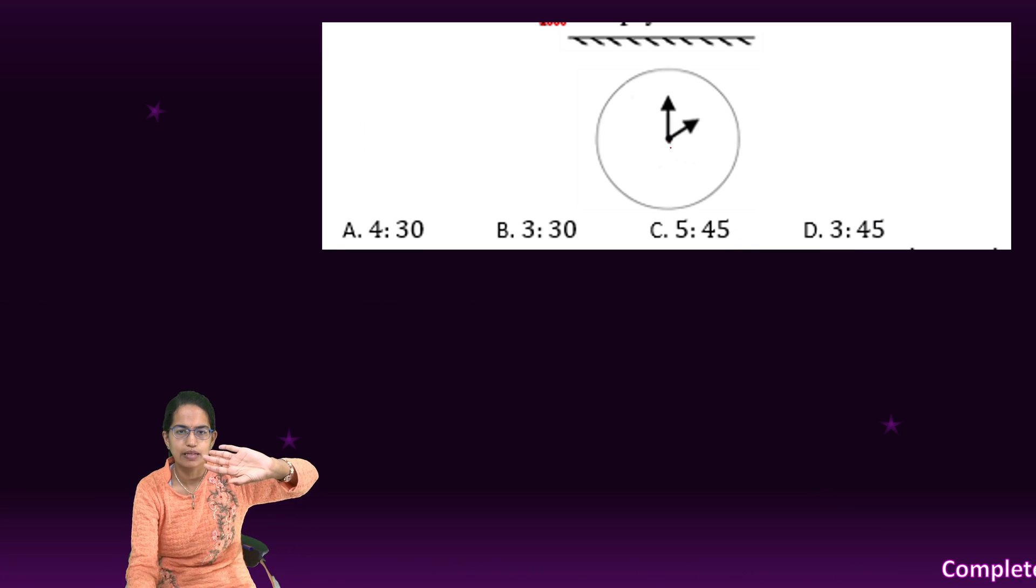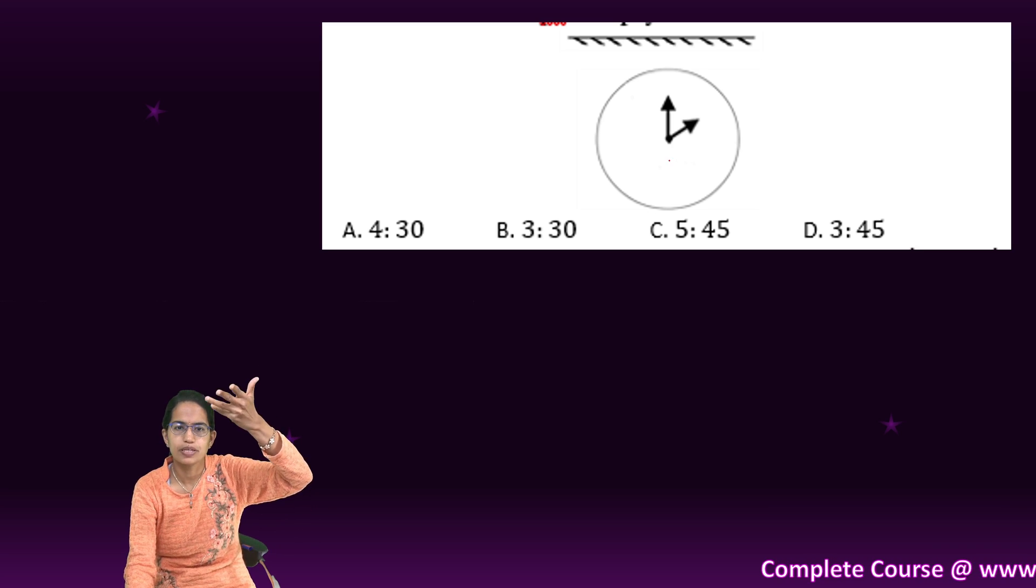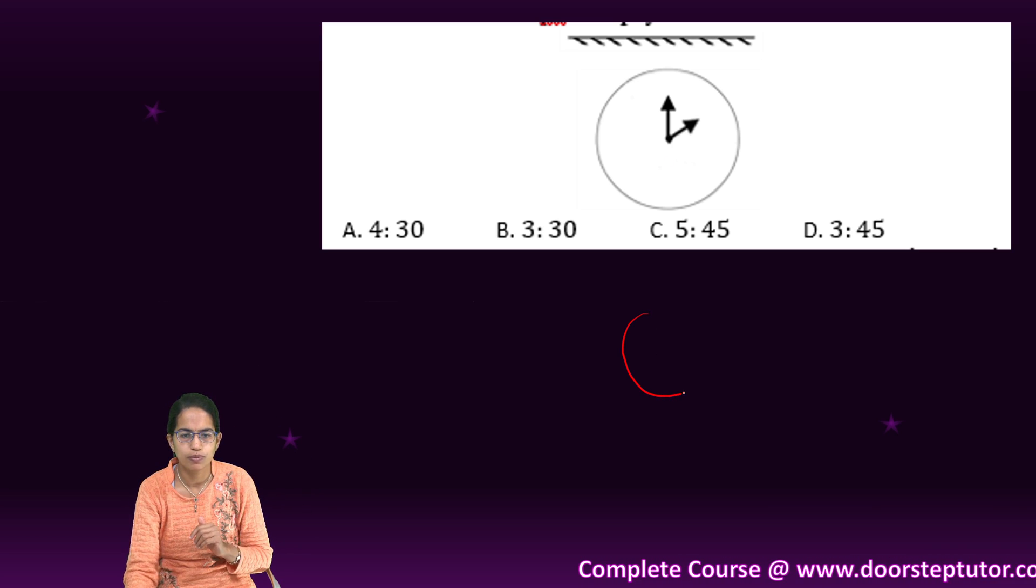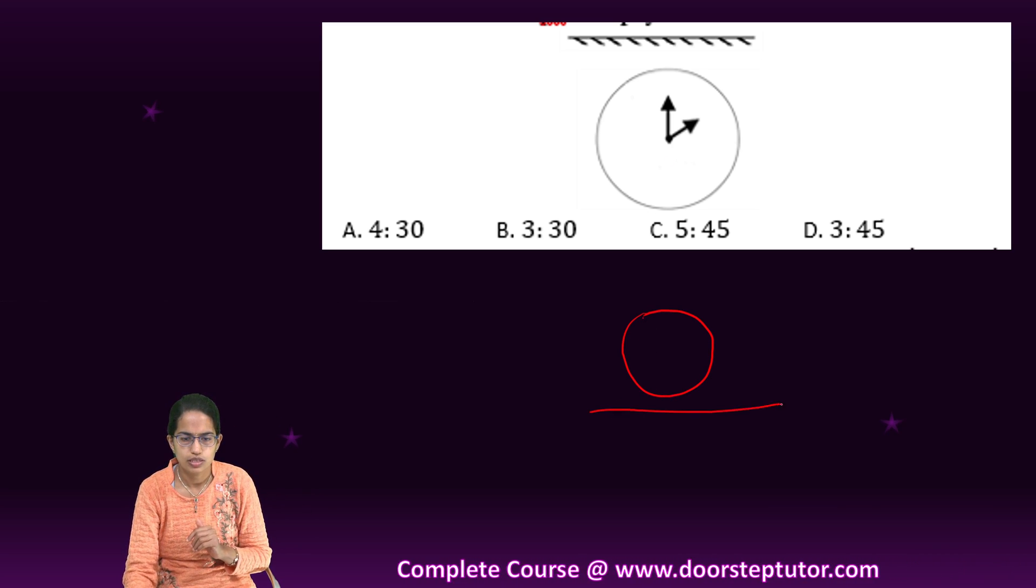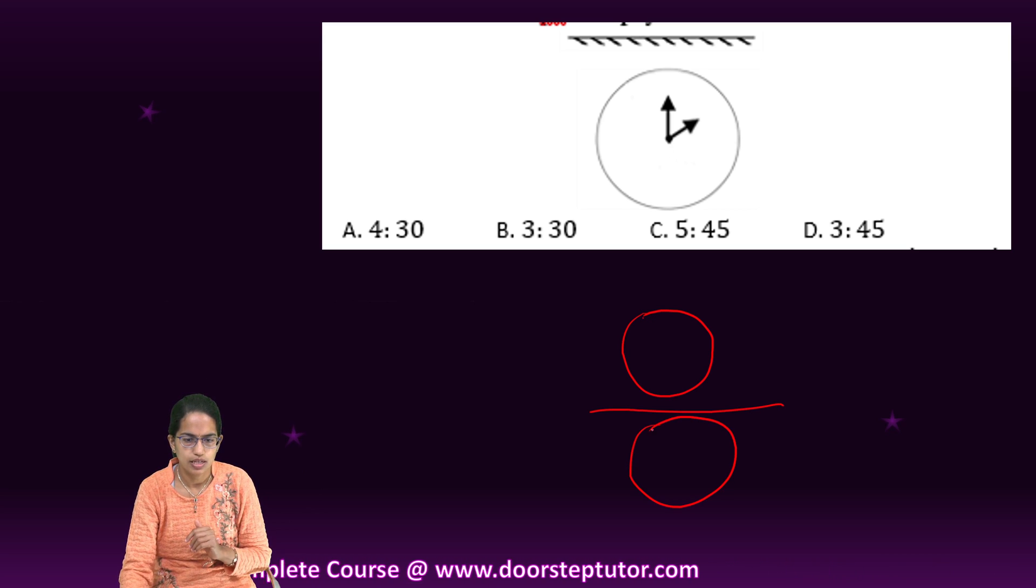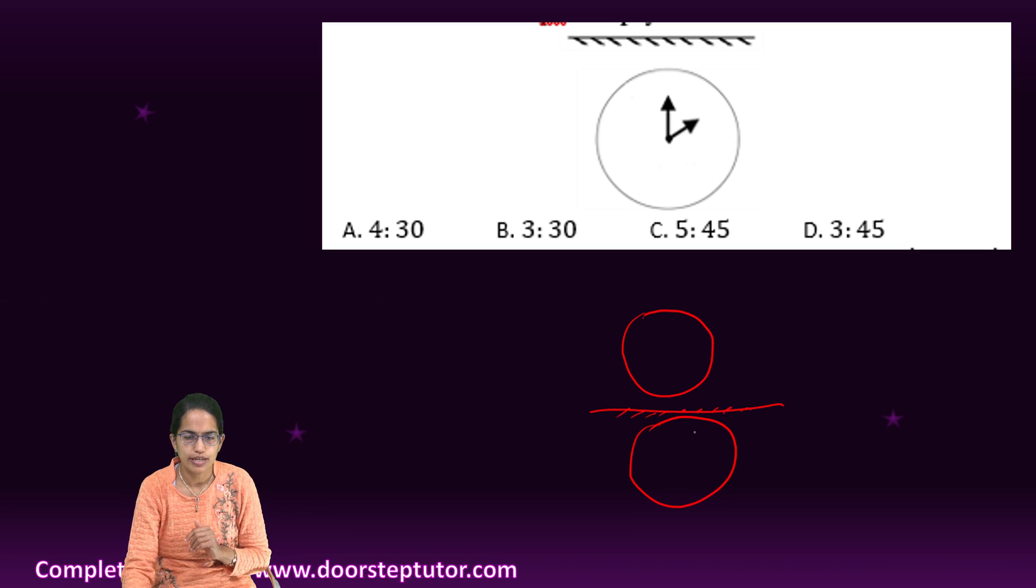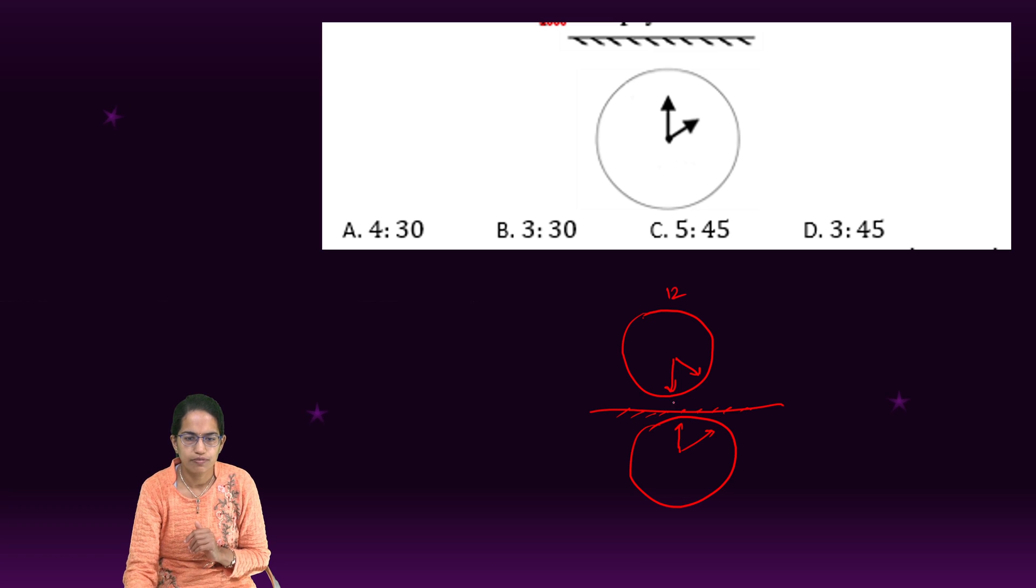If this is the time, what is the flip image of it? So flip image of it would be what? So this is the circle and this is another circle. In the image, what time I am seeing is here and here. So here it would be here and here. So here it is 12, here it is 6.